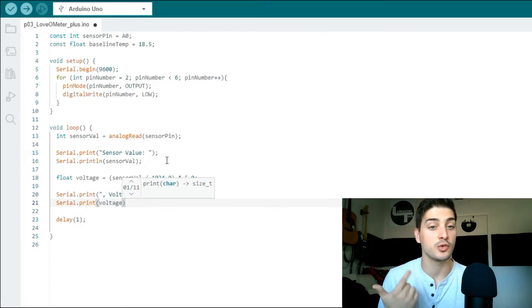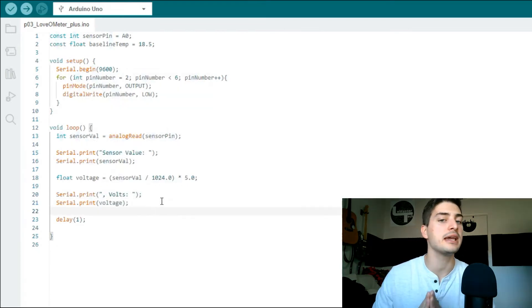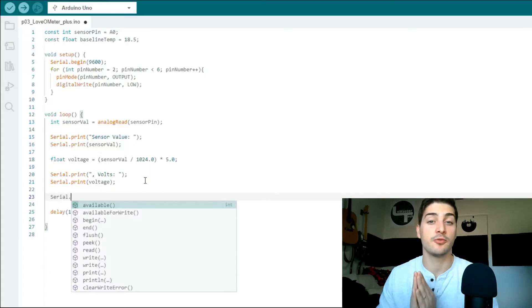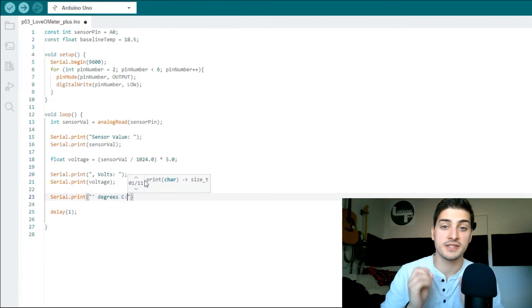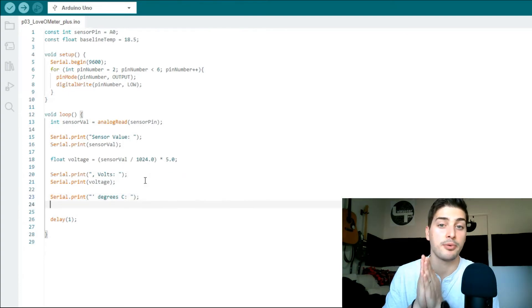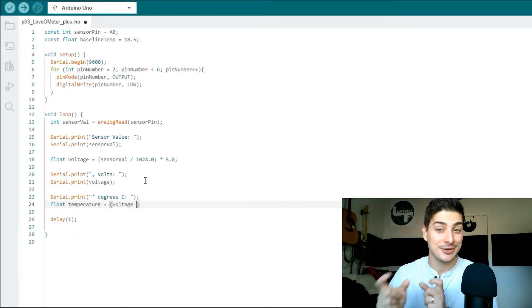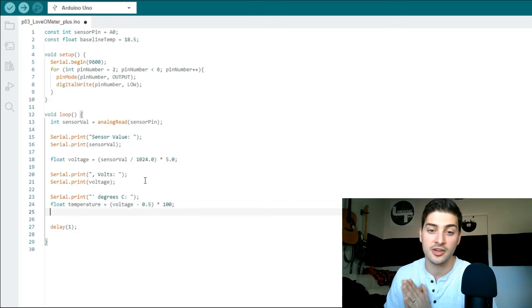Lastly, to get the actual temperature, which is what we really want, we want to check the TMP36 data sheet. It tells us it has a minimum temperature reading of negative 50 degrees Celsius at 0 volts, and that for every 10 millivolts or 0.01 volts of signal increase, that represents a real-world 1 degree Celsius increase of temperature. This means to convert from volts to degrees Celsius, subtract 0.5 from volts, and then multiply by 100. Throw in two more serial prints so that we can get the temperature readings right next to voltage and raw.